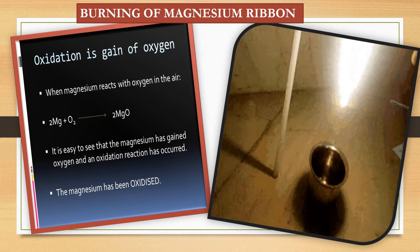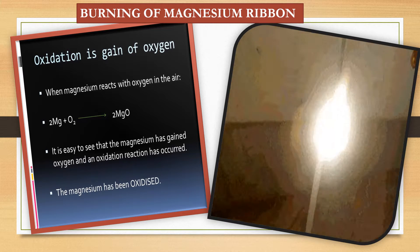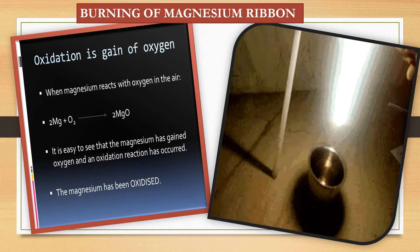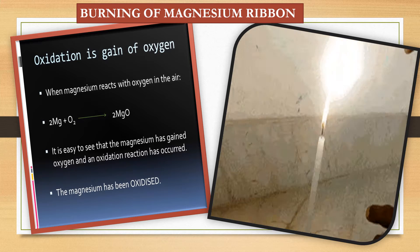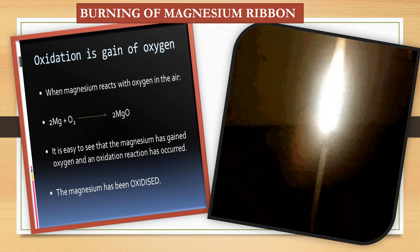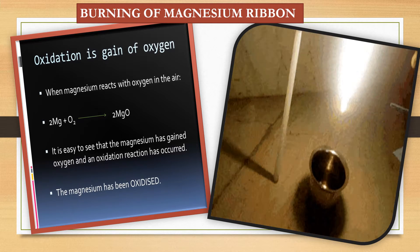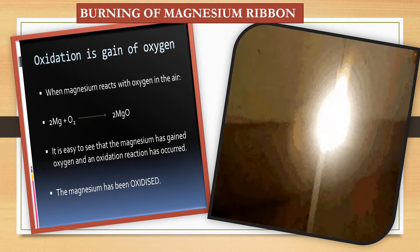Now, see this experiment. When a magnesium ribbon and candle is there, magnesium ribbon burns and forms magnesium oxide, white color powder and this white color light. This is actually magnesium oxide. So, let's do the sum with this equation.